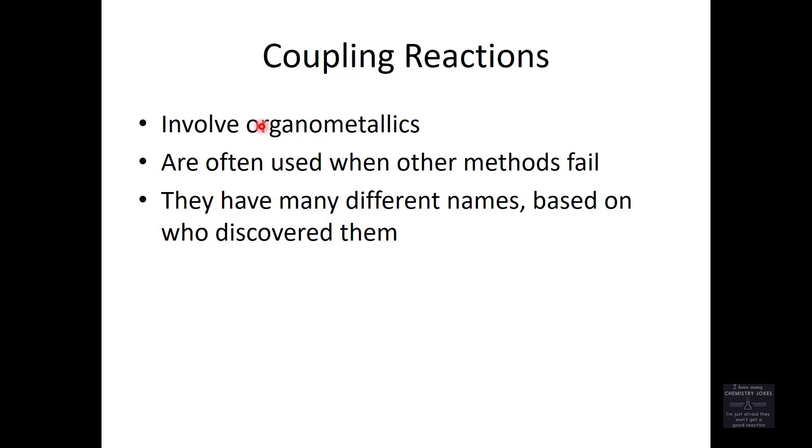Coupling reactions involve organometallics. These coupling reactions are often used when other methods fail, meaning if you want to put this piece and this piece together to make a bond, if a traditional SN1 or SN2 or E1 or E2 or addition reaction doesn't work, you can maybe use a coupling reaction. They have many different names based on who discovered them.